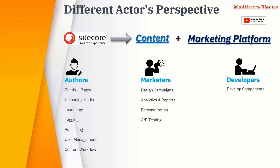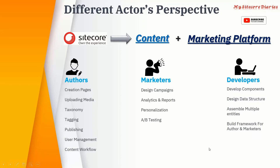Developers build components, define the data structure, and assemble everything to provide a framework for authors and marketers. For example, on a home page, the developer builds components like header, footer, and hero banner. The image content within the hero banner is added by authors. If the banner needs to change based on user behavior, that is defined by the marketers. These are the three different roles in Sitecore CMS.